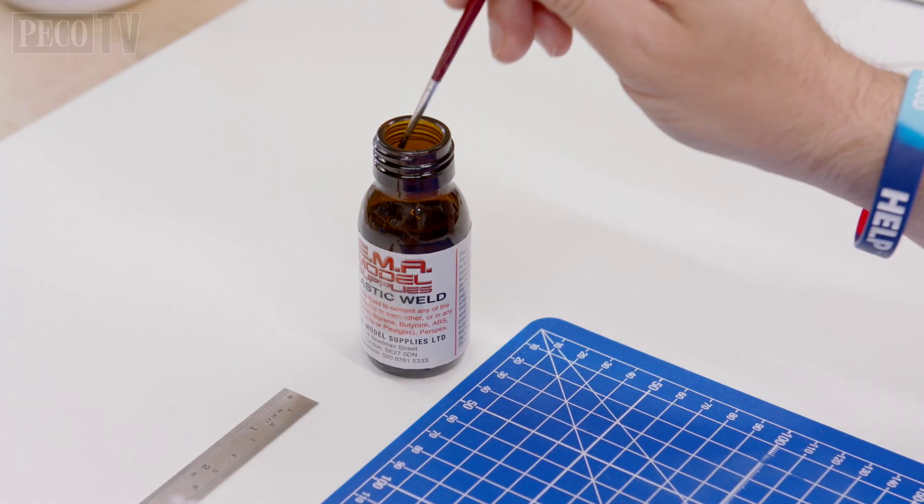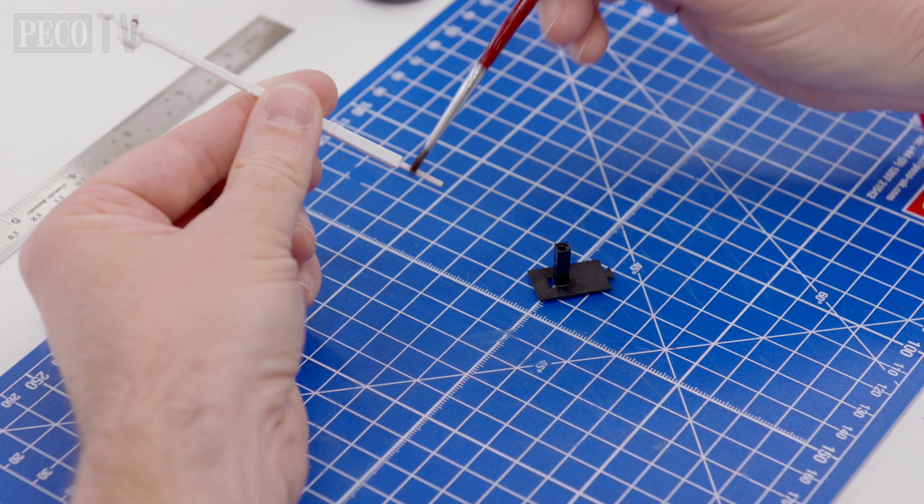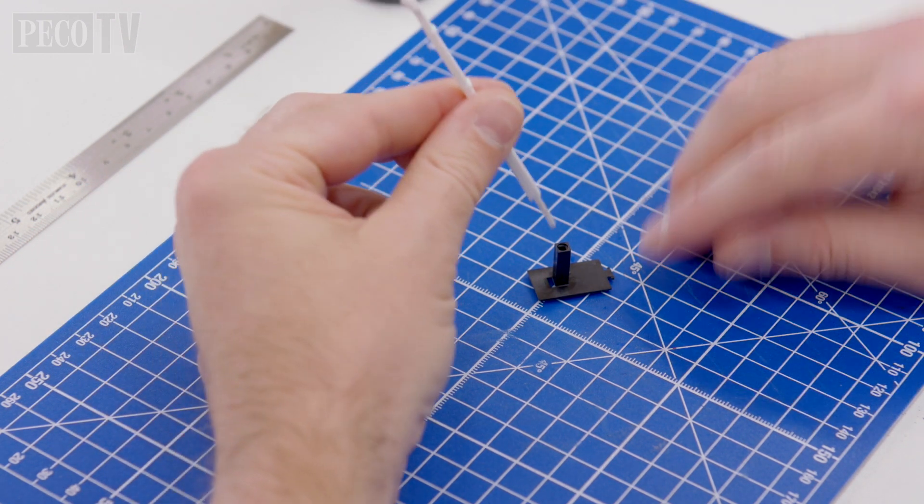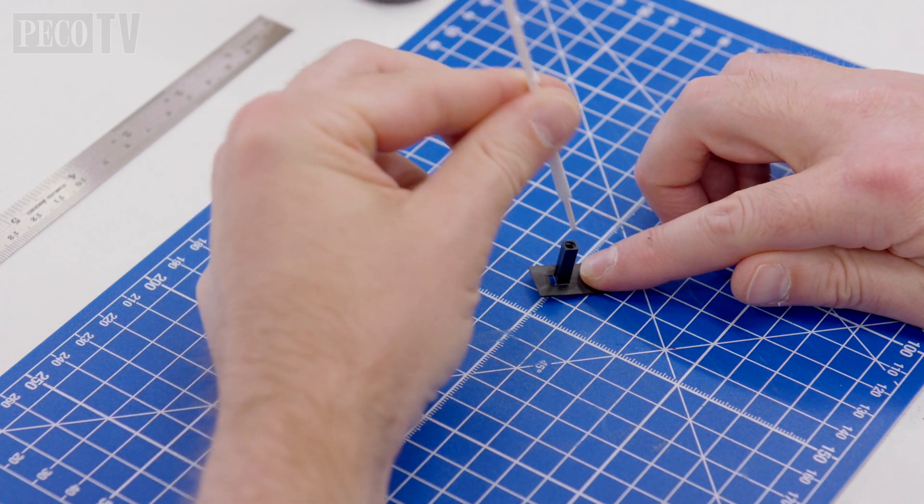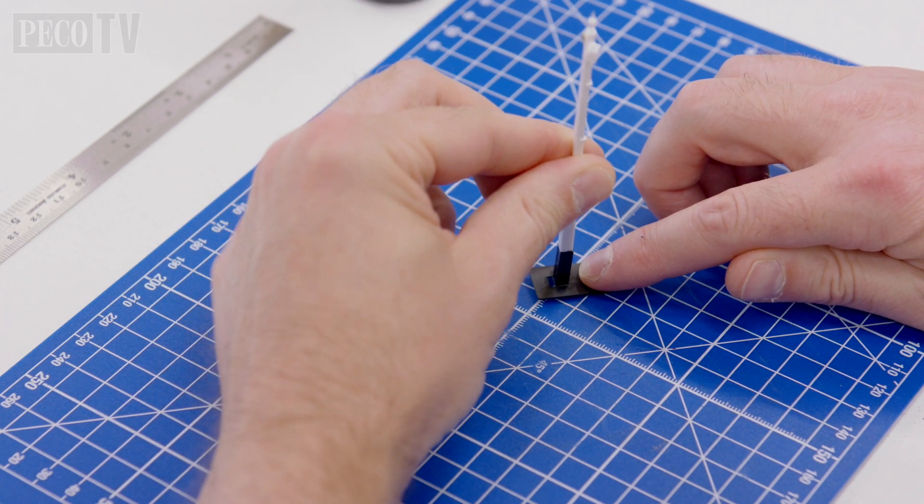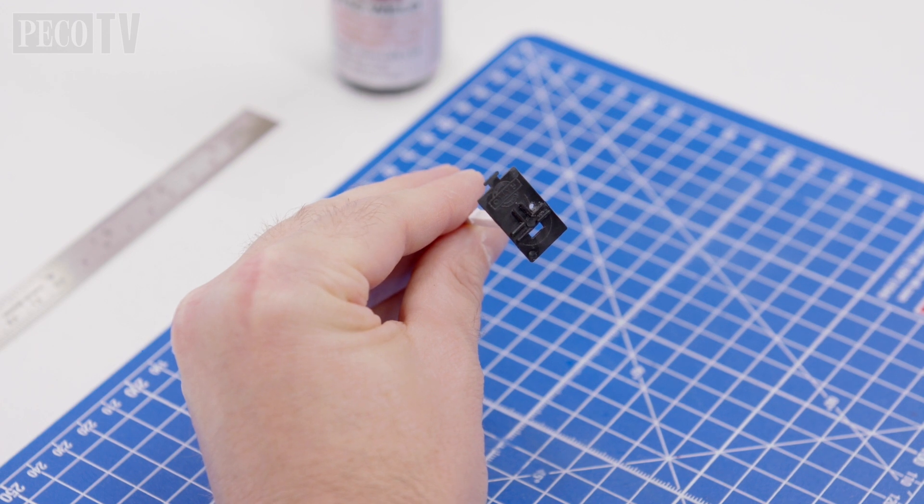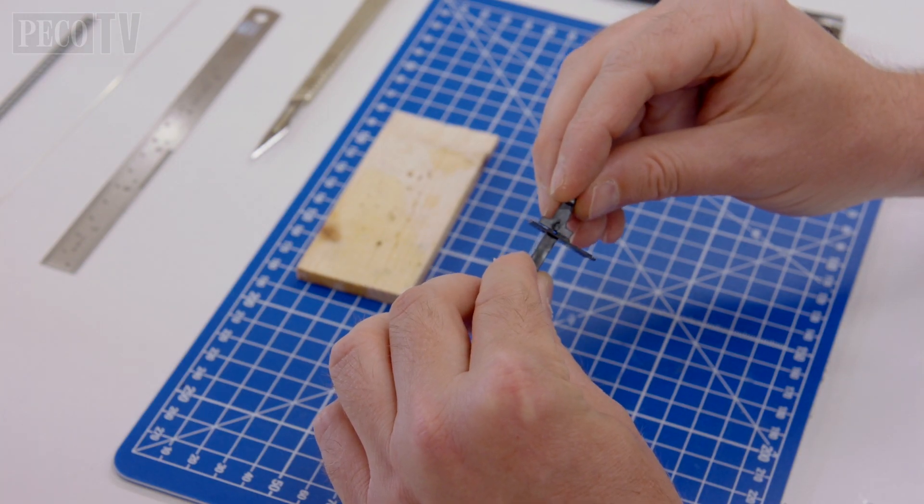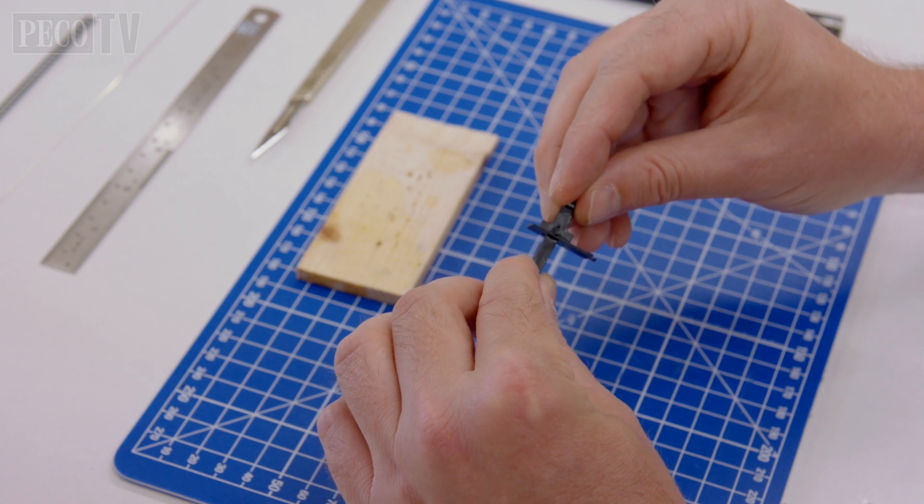Using plastic weld and a paintbrush, cement the post onto the base. When it sets, locate the quadrant to the underside of the base of your post.